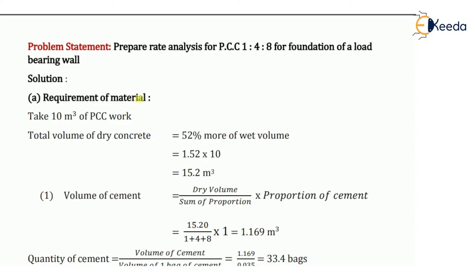First we have to find out the material requirements, taking 10 cubic meters of PCC work. The total volume of dry concrete will be more than the wet concrete quantity. This 10 cubic meters is the wet PCC quantity. The thumb rule is to take 52% more for the dry volume, so we multiply by 1.52: 1.52 × 10 = 15.2 cubic meters. This 15.2 cubic meters is the dry volume of concrete.